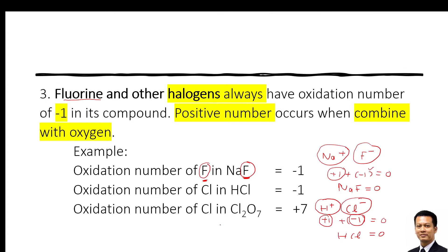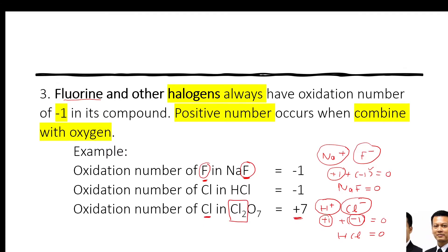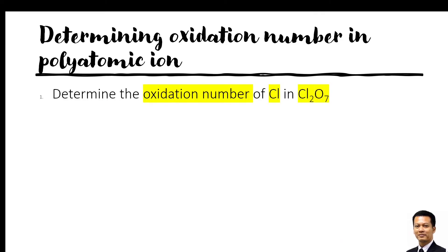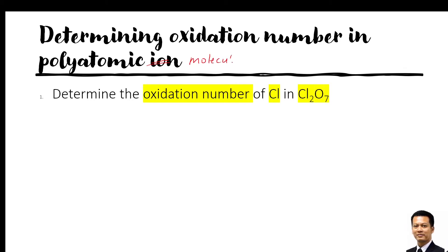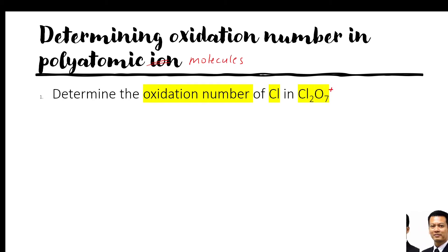But what about the oxidation number of chlorine in Cl₂O₇? We are looking for chlorine. There are 2 chlorines in Cl₂O₇ and the answer is +7. How do we get +7? We can calculate it. This is in a polyatomic molecule — not a polyatomic ion — because this molecule is neutral. If it had a charge, for example negative or positive, it would be an ion. But since it has no charge, it is just a molecule.